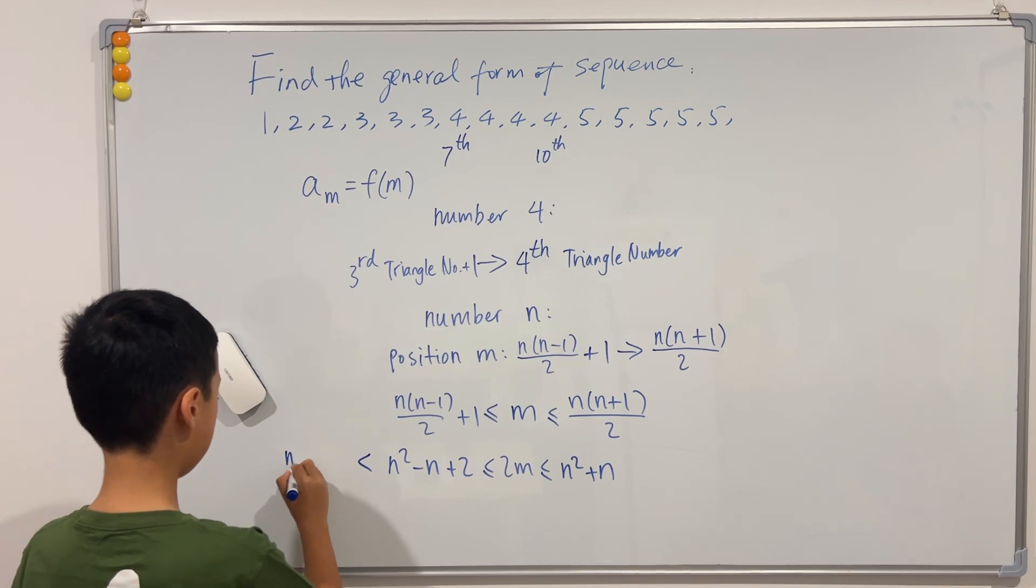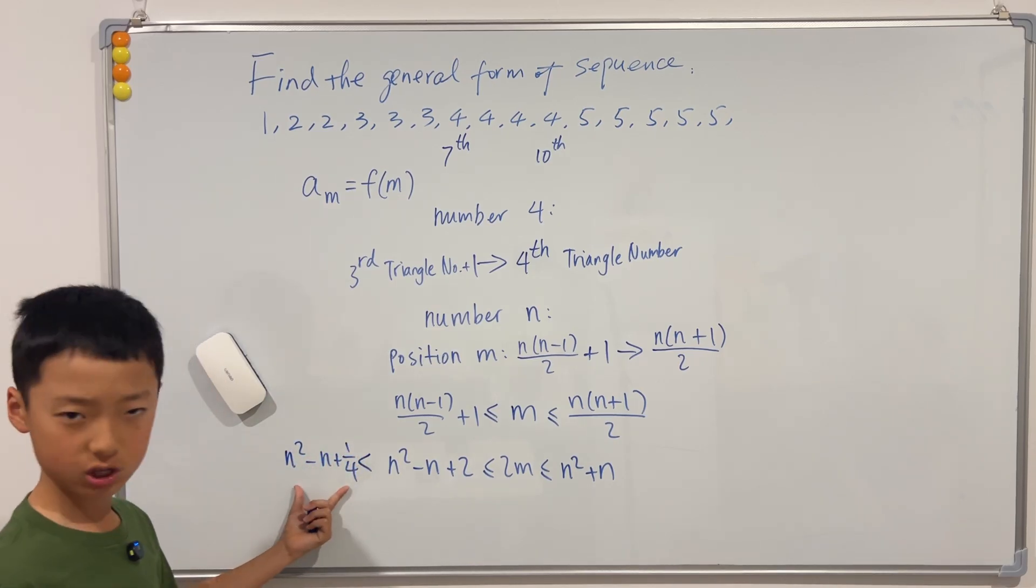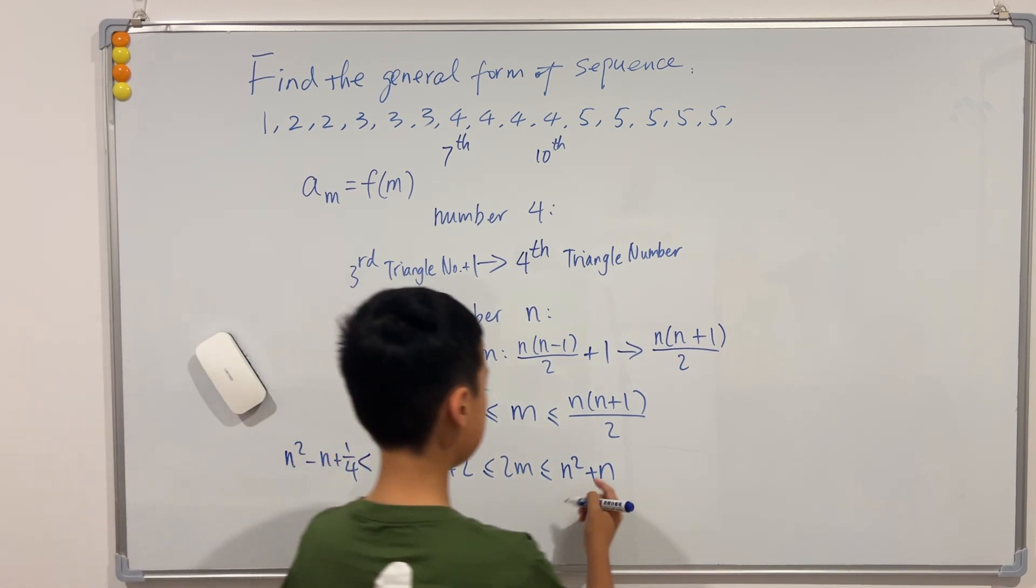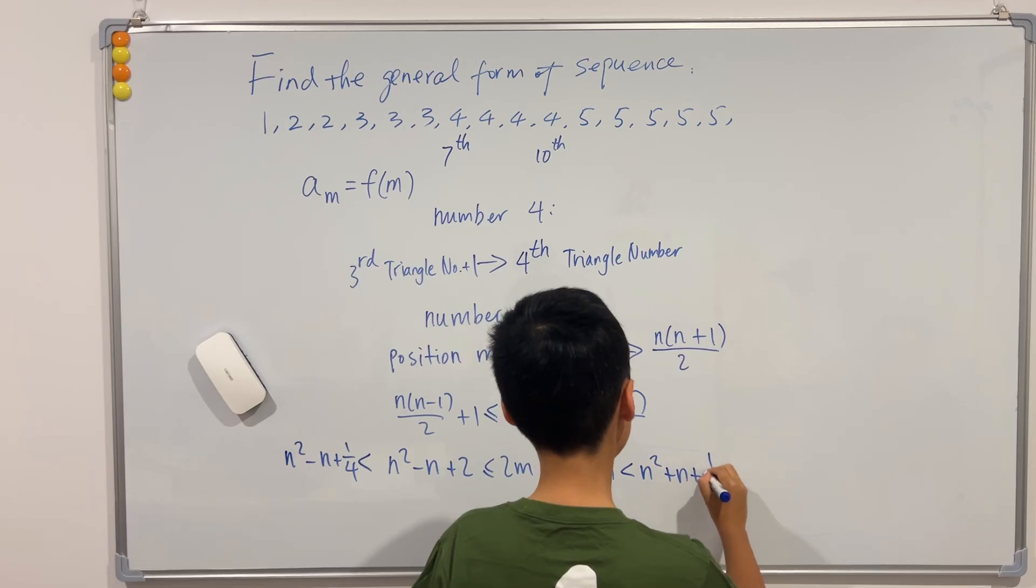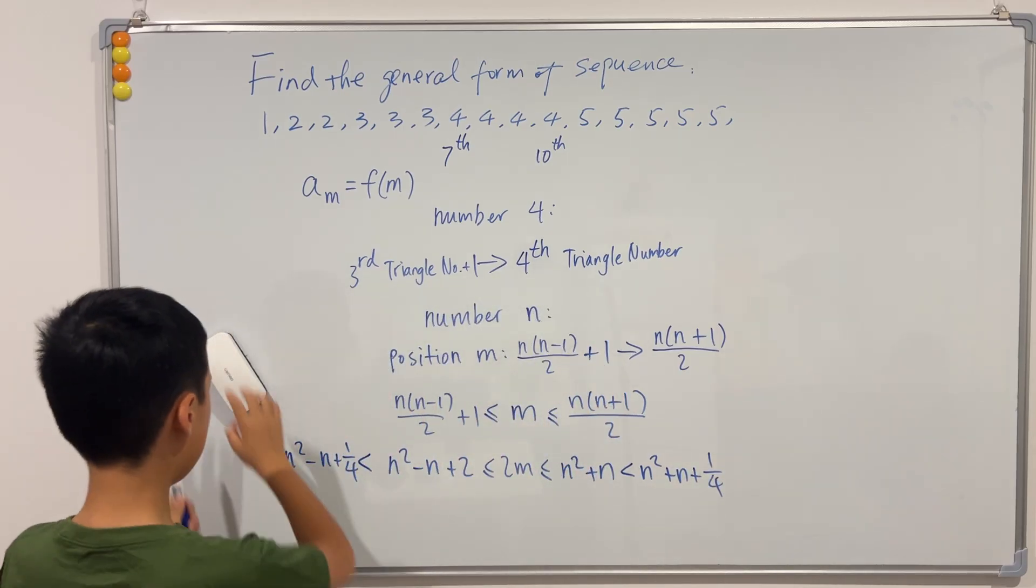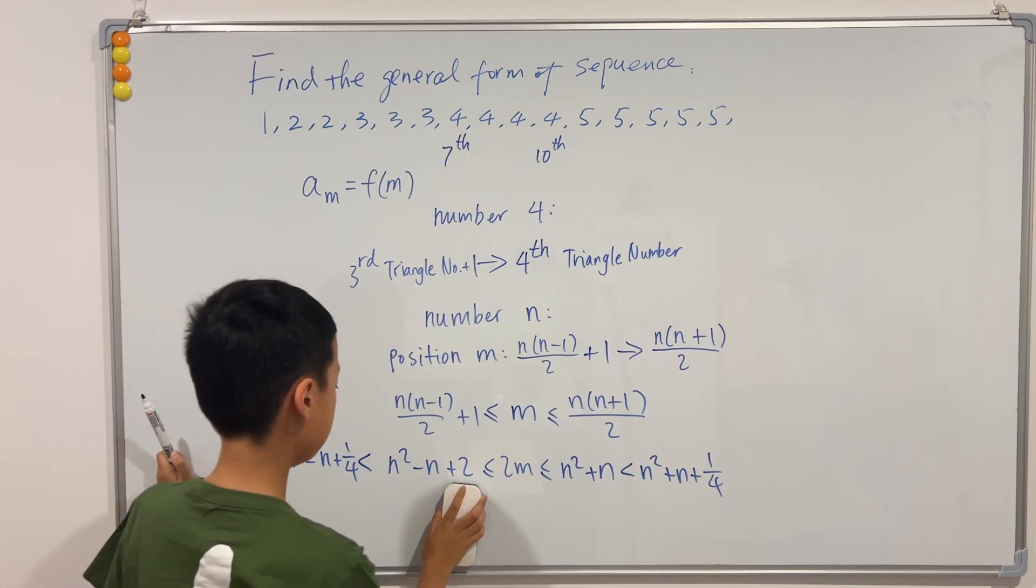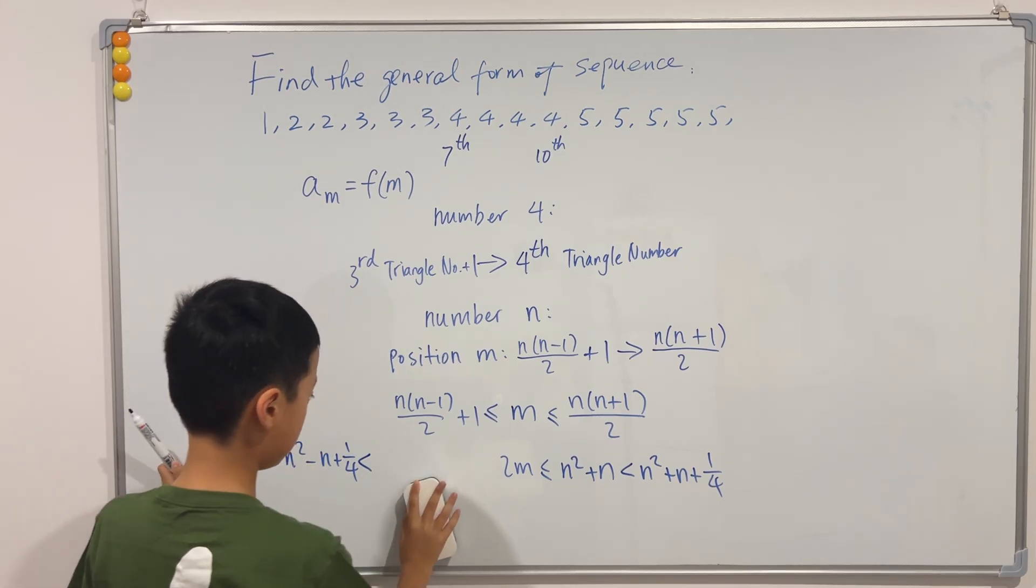n squared minus n plus one quarter, and this is actually a perfect square. And this is less than n squared plus n plus one quarter. So now we see that we have this cool relationship.